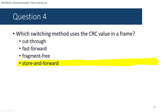Question number twenty-one: What is the function of the CRC value found in the FCS field of a frame? Options include: to compute the checksum header for the data field, to verify the physical address in the frame, to verify the logical address in the frame, or to verify the integrity of the received frame. The answer is to verify the integrity of the received frame — that is the purpose of the CRC value.